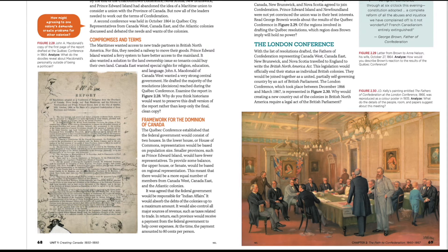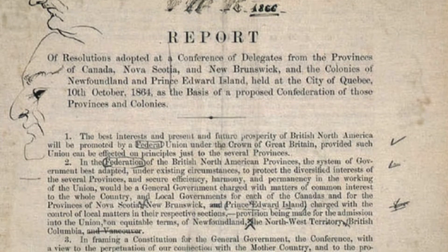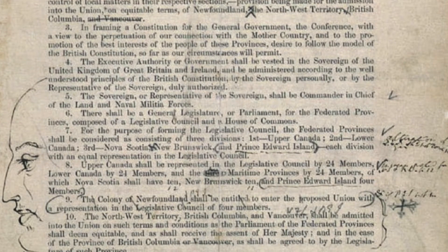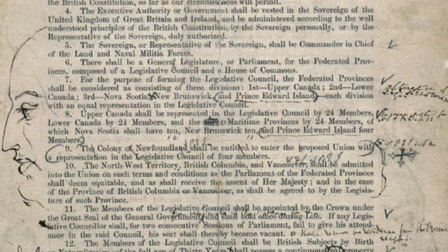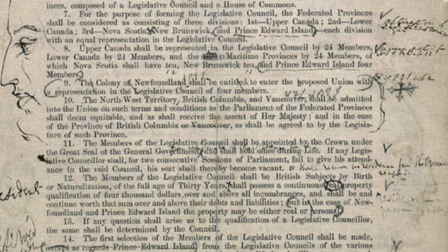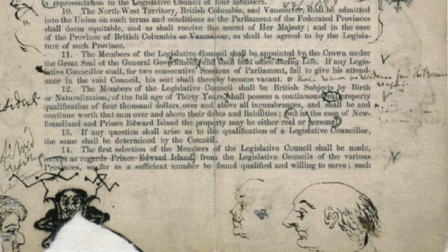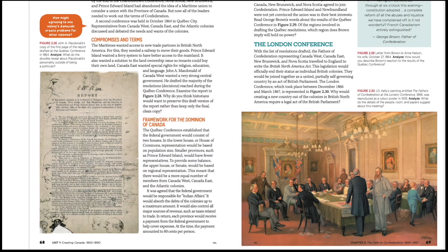Examine the report in figure 2.28. Why do you think historians would want to preserve the draft version of the report rather than only the final clean copy? As historians, you can see the progress, some of the disagreements around confederation, and how they came to reach an agreement.